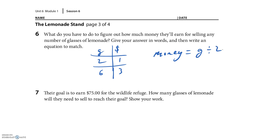Their goal is to earn $75 for the wildlife refuge. How many glasses will they need to sell? Do you halve 75? That gives $37.50 but that doesn't seem right — they're selling each glass for 50 cents, so we actually multiply times 2. So 75 times 2 = 150. They need to sell 150 glasses.